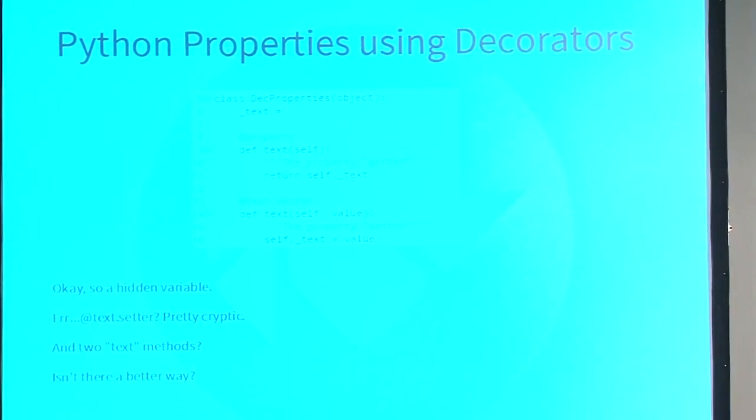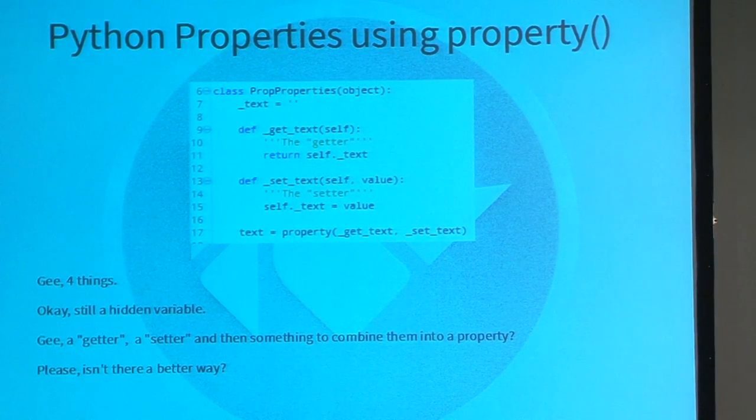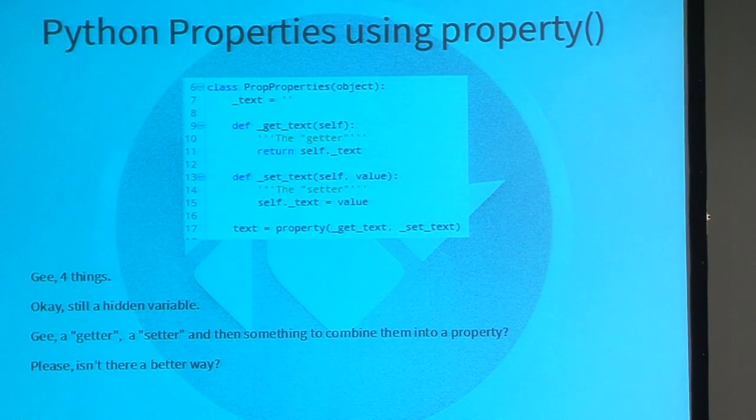Here we have standard Python property using decorators. We've got a hidden property, text. We've got a text method, decorated, and then we've got a text setter. That's pretty cryptic, and you've got two methods called text — it doesn't strike me as very Pythonic. So is there another way to do it? Yes — we could use the Python property. So now we've got a hidden variable, and we've got two methods — a setter and a getter — and we have to combine them with a property. So that's like four things. Surely there's a better way.